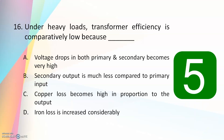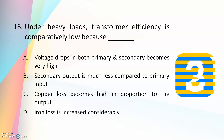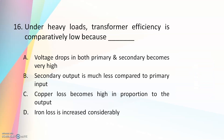Sixteenth question: under heavy loads, transformer efficiency is comparatively low because — voltage drops in both primary and secondary become very high, secondary output is much less compared to primary input, copper loss becomes high in proportion to the output, or iron losses increase considerably. The answer is copper loss becomes high in proportion to the output. Copper loss equals I²R and is proportional to the square of the current; under heavy load, the current is very high, so copper loss becomes very high, reducing efficiency.